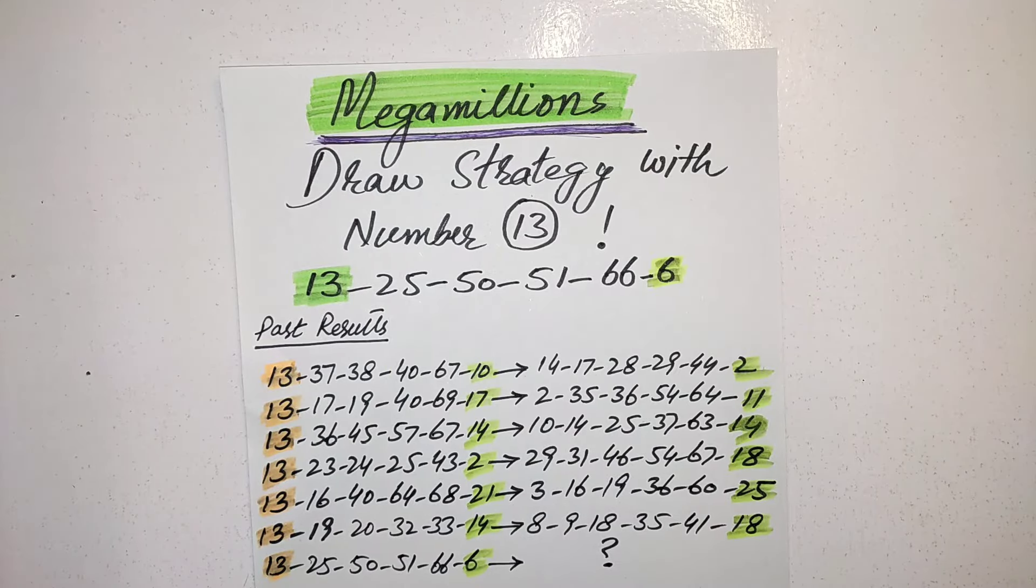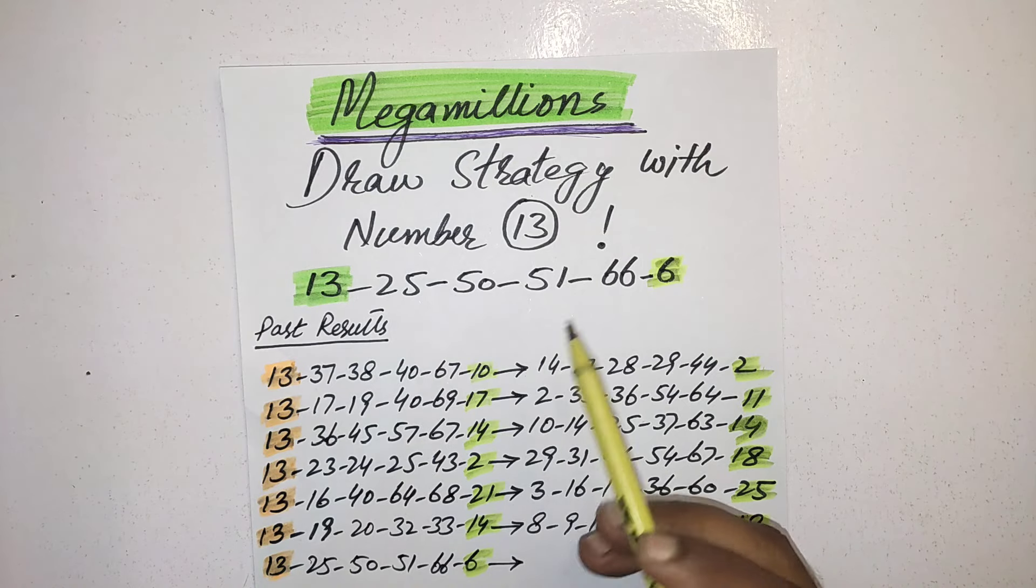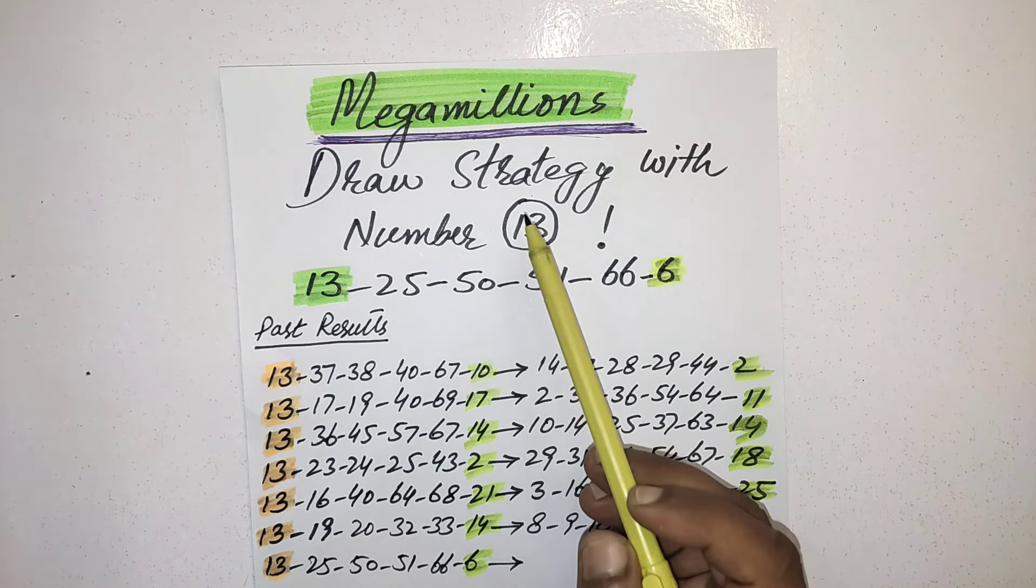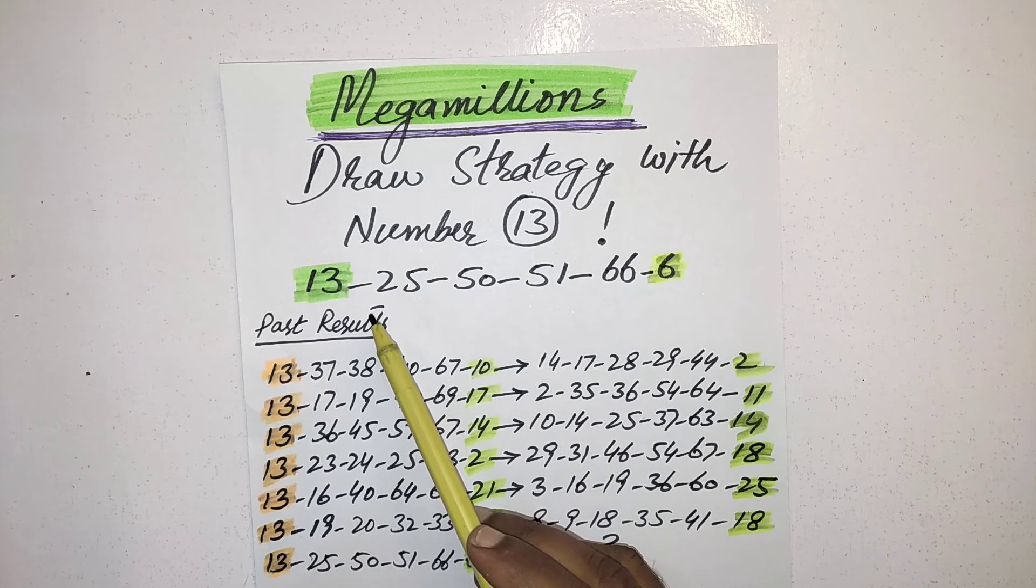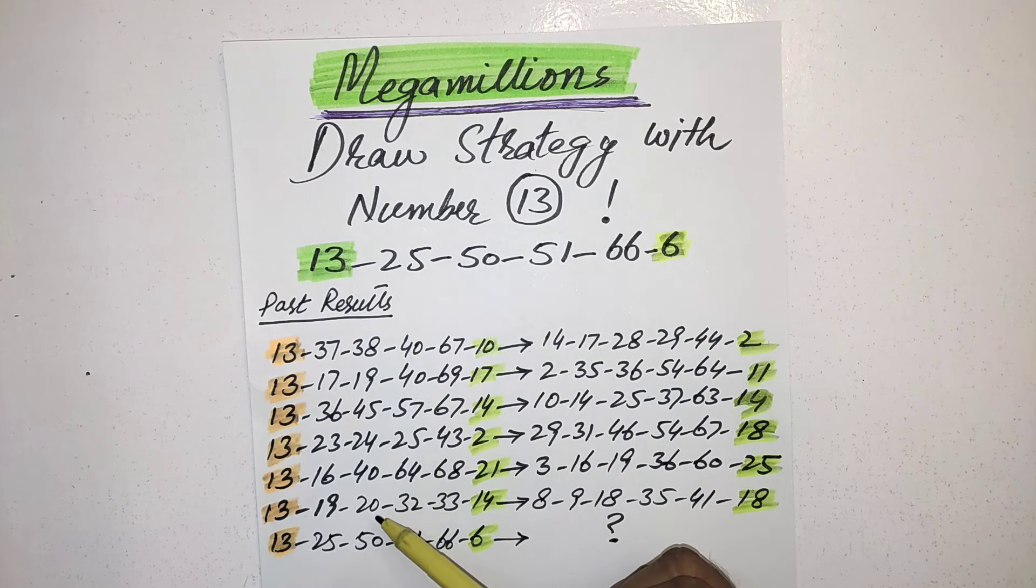Hi my friends, this video is for Mega Millions upcoming draw. I am going to share with you the best strategy with the number 13. This is the previous result of Mega Millions draw and this is the past history in which the 13 number came as the first number in the result.